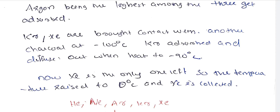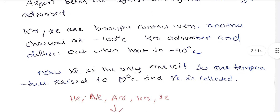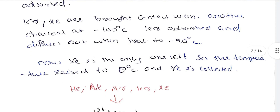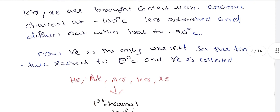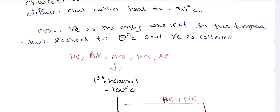Krypton is absorbed and then diffuses out when heated to minus 90 degrees Celsius, separating krypton from xenon. After krypton is removed, only xenon remains. The temperature is then raised to 0 degrees Celsius and xenon is collected.